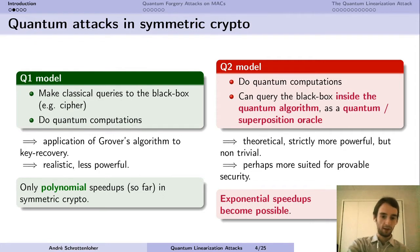But he can only make classical queries to our black box, for example a cipher with a secret key. This is the more realistic model, and this is also the model in which you can think of applying Grover's algorithm to key recovery.